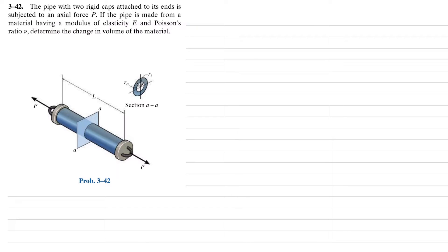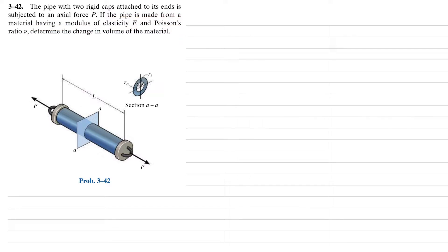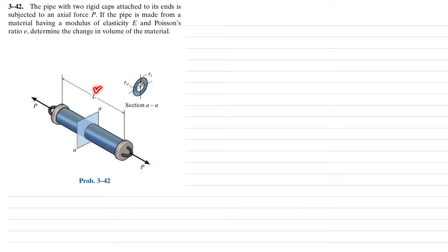Welcome back. Problem 3.42: a pipe with two rigid caps attached to its ends is subjected to an axial force P. The pipe is made from a material having modulus of elasticity E and Poisson's ratio nu. The cross-section of the pipe shows outer radius r_o and inner radius r_i. Due to this axial load, the length of the pipe will increase while the diameter will decrease. We have to find the change in volume.